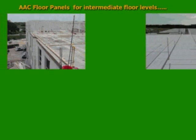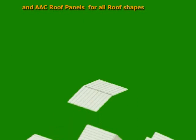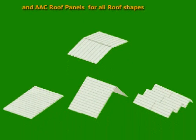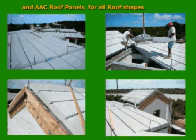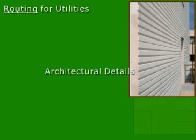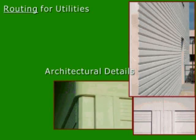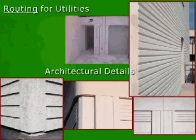AAC panels can also be used for elevated foundation slabs and for intermediate floor slabs on multi-story buildings for commercial or residential projects. AAC panels can be used for AAC roofs of all shapes. The advantage is having a full fire-rated envelope and a roof that performs thermally in both cold and hot areas. It is very easy to route for utilities or architectural details — any lines or any shapes — and it is easier to handle than wood.